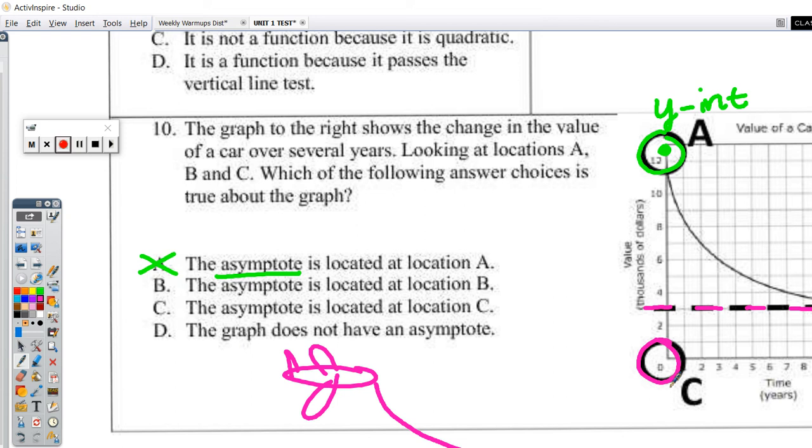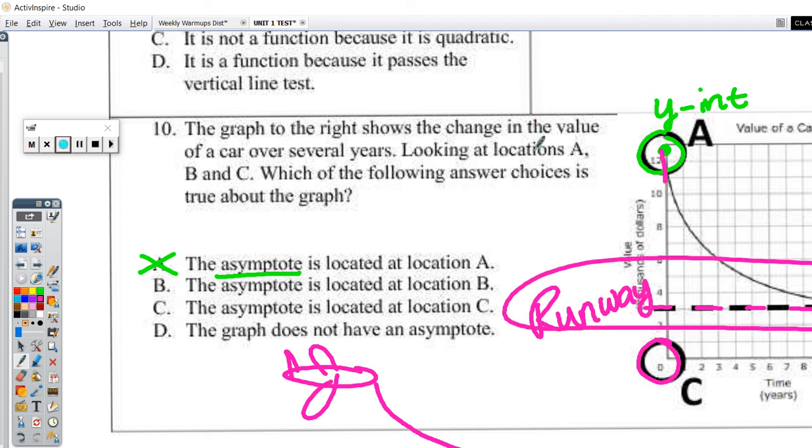And knowing that definition, we know that if we were to look for a runway, well, it looks like location B does that. See how this plane's coming in? So our asymptote is located at location B.